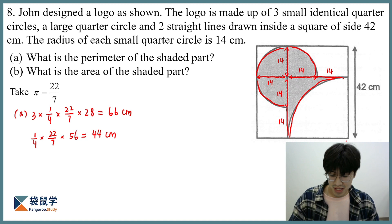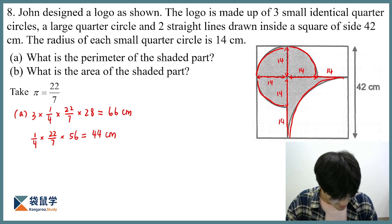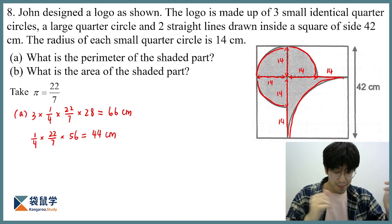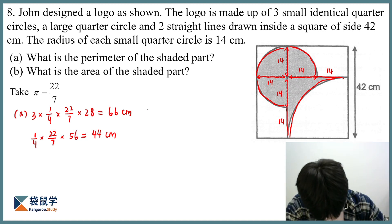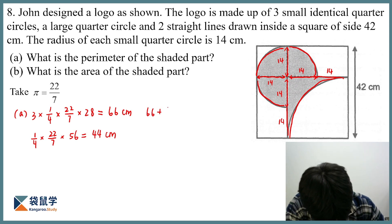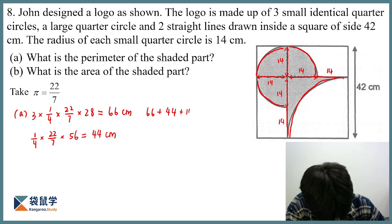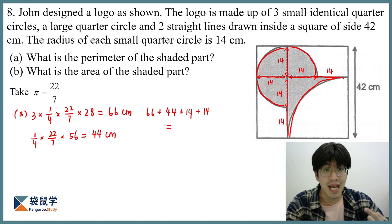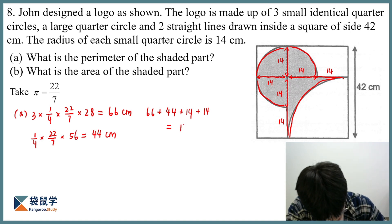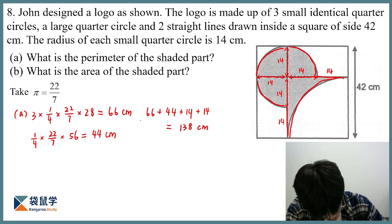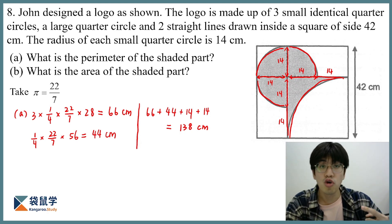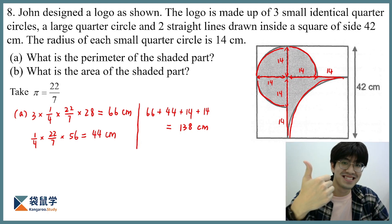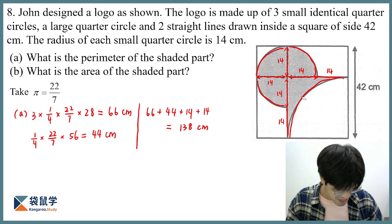So how do I get a total perimeter? Very simple — I just add them all up. So 66 plus 44, and don't forget about the two straight lines, 14 and 14. And this should add up together to the final answer: 138 centimeters. That's the total perimeter for the first part.